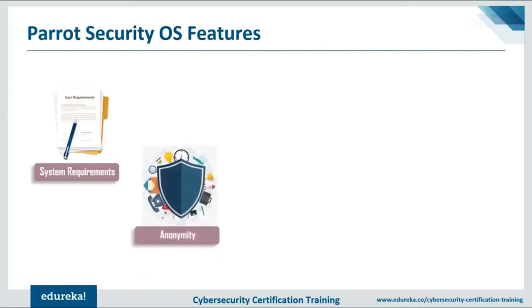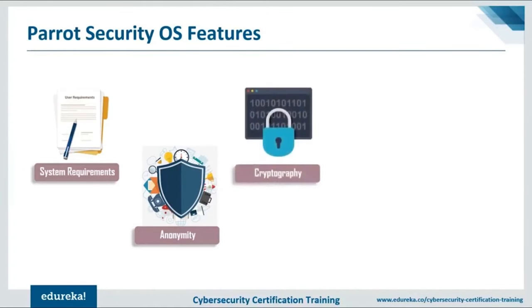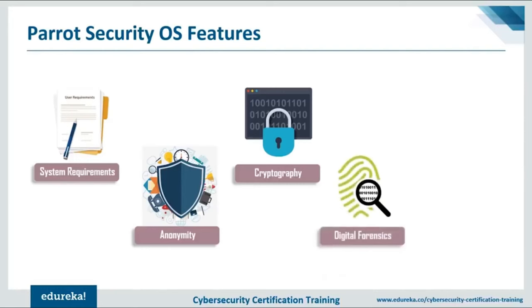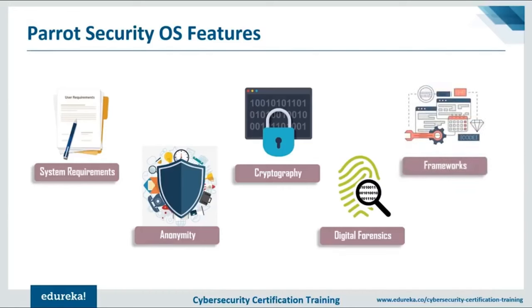Parrot OS supports anonymity — it offers a tool called AnonSurf, including anonymization of the entire operating system. It comes with custom-built anti-forensic tool interfaces for GPG and crypto setup. Additionally, it supports encryption tools such as LUKS, TrueCrypt, and VeraCrypt, among others. It also supports a forensic boot option to shut down automounts and many more features.